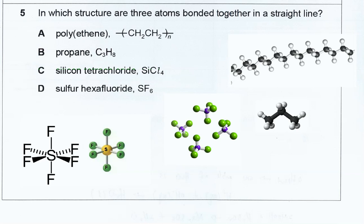Welcome to Tiani KL Chemistry channel. For this question, it's asking which structure are three atoms bonded together in a straight line? So first, you need to know how the structure looks like.